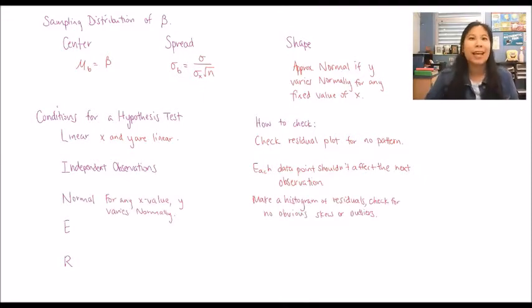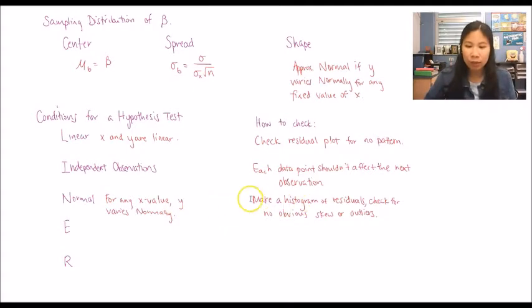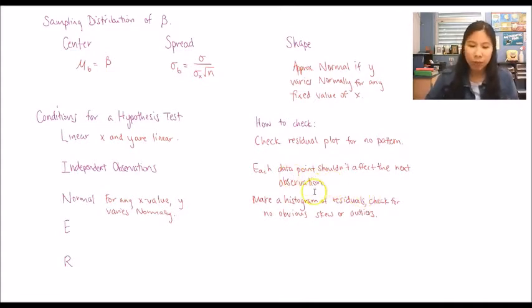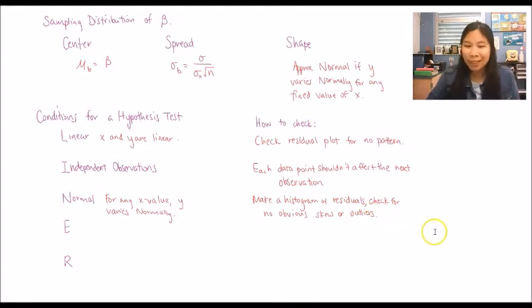The N stands for normal. For any x value, y needs to vary normally. To check for that, make a histogram of your residuals, because the residuals show the differences between your observed y value and your predicted y value.